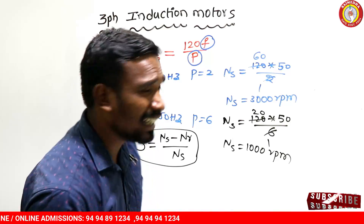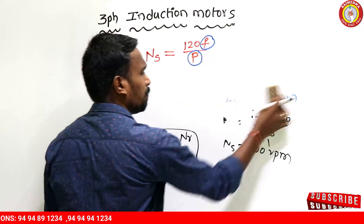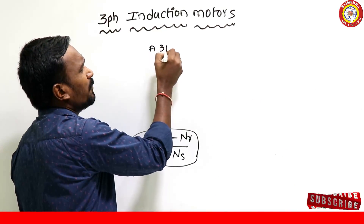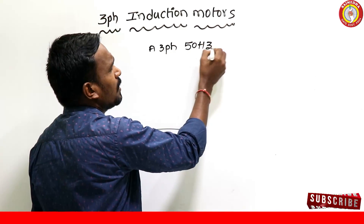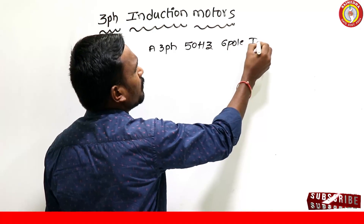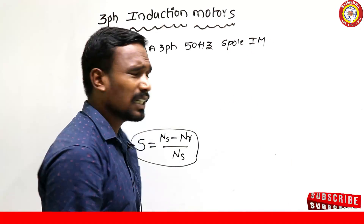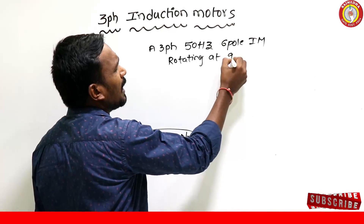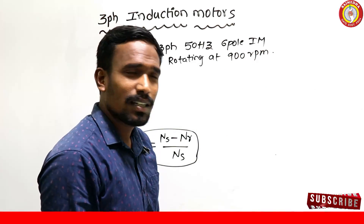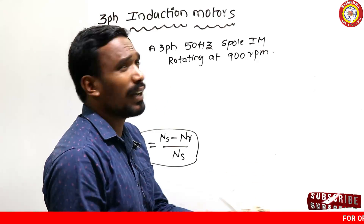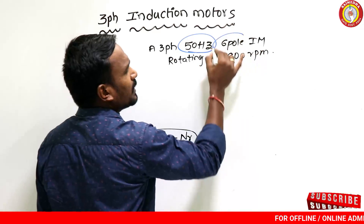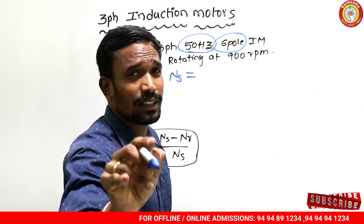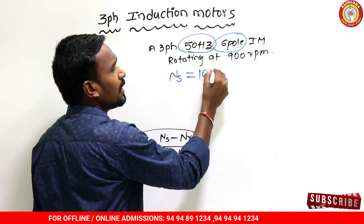For example, a 3-phase, 50 Hz, 6-pole induction motor rotating at 900 RPM. First question: find the synchronous speed Ns. For a 50 Hz, 6-pole motor, Ns equals 1000 RPM.